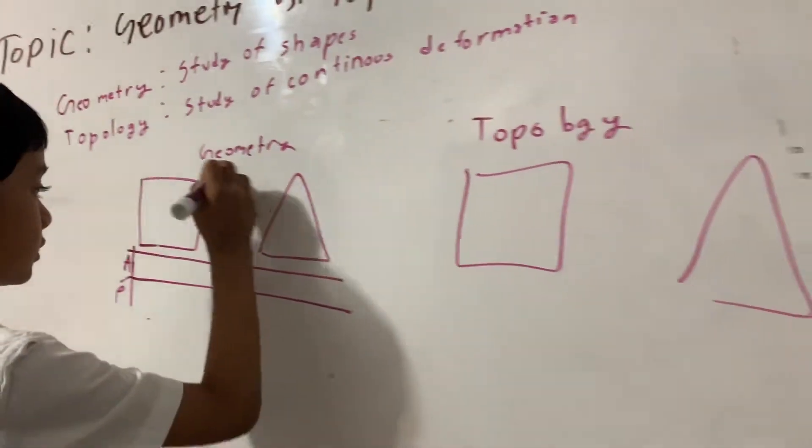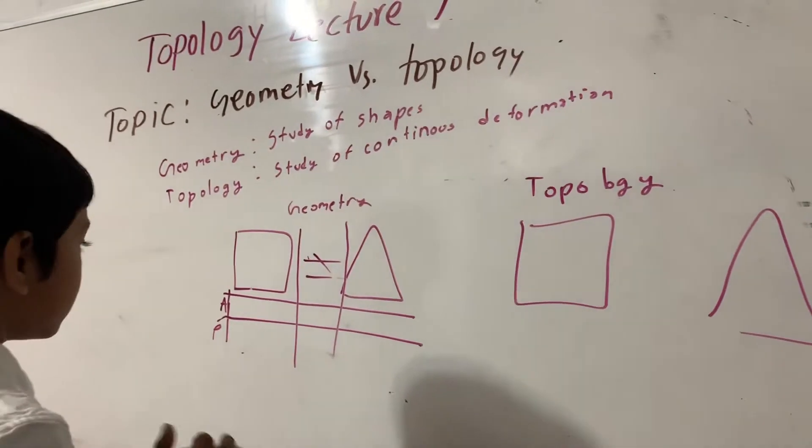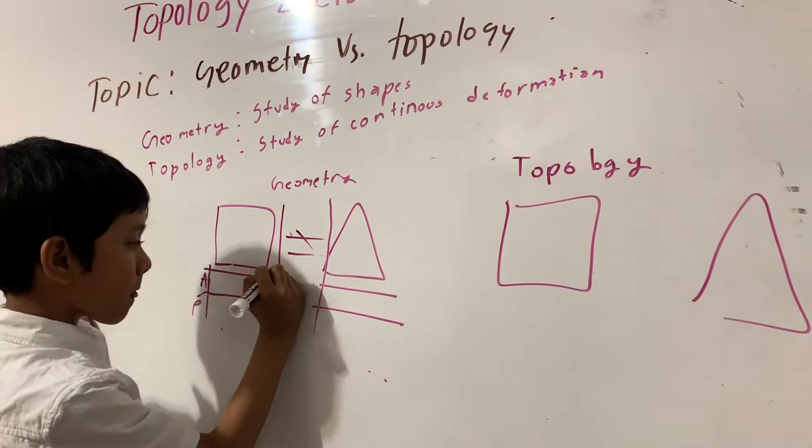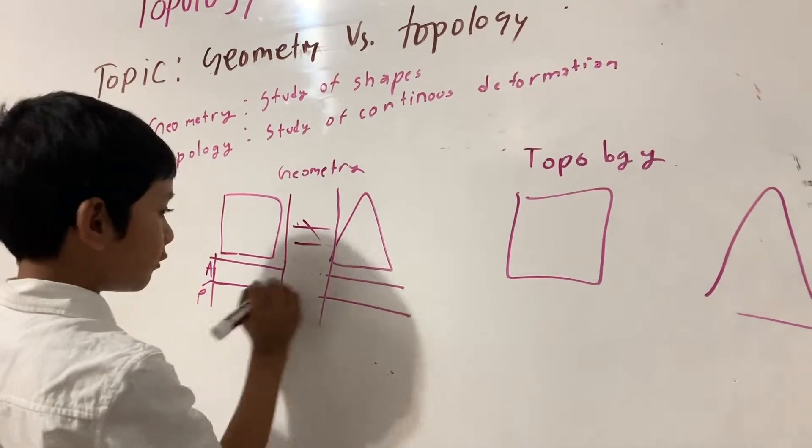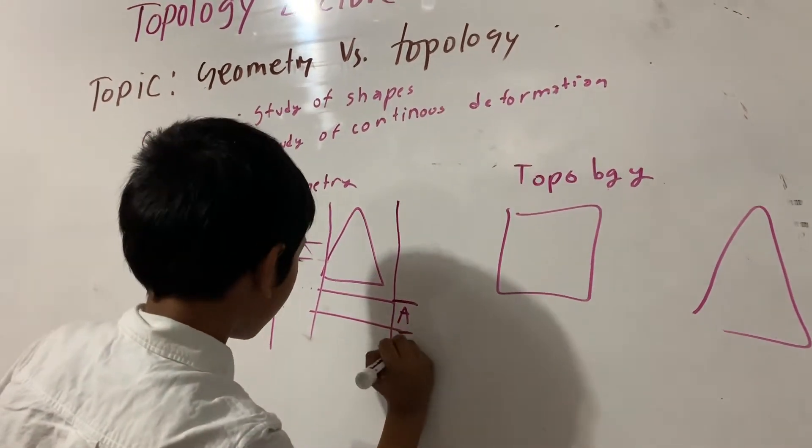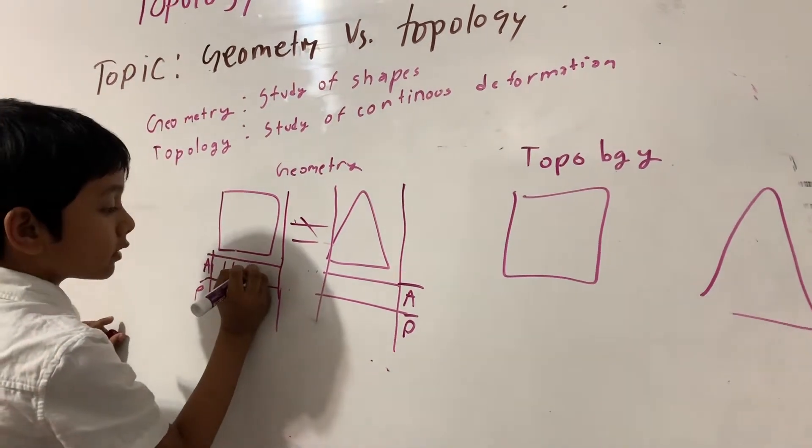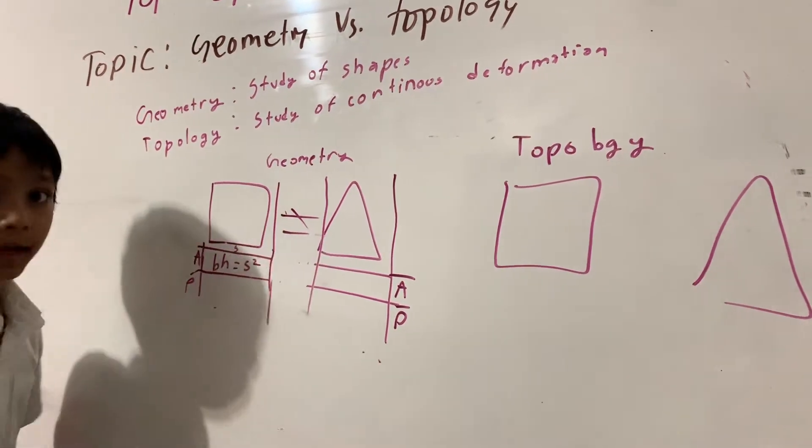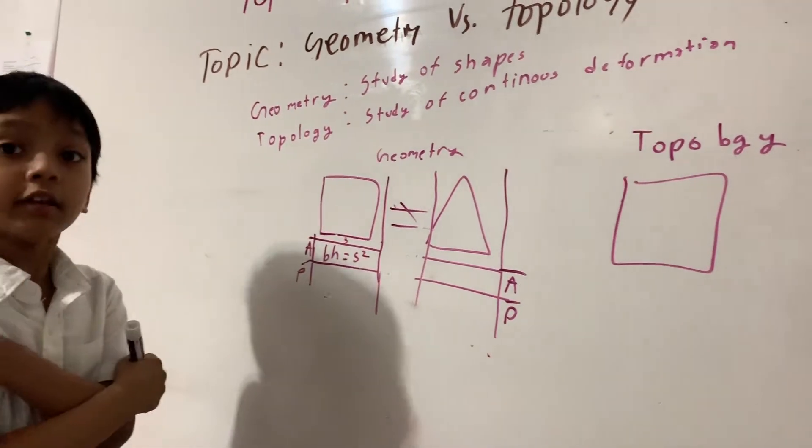So, let's see the area of a square and the area of a triangle. The area of a square is equal to base times height or S squared. S, by the way, is the length of one side of the square. All sides of the square are equal.